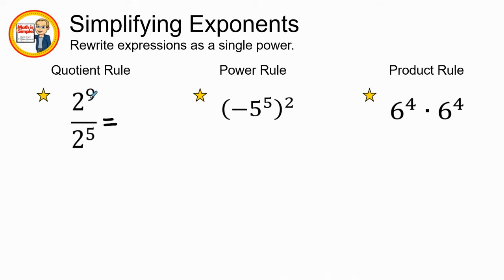As we come to find using the quotient rule, we have two to the ninth power over two to the fifth power. If we remember what we said earlier, we have a variable raised to the m power over the variable raised to the nth power. What we want to do is keep the base x and then take our two powers and subtract them.